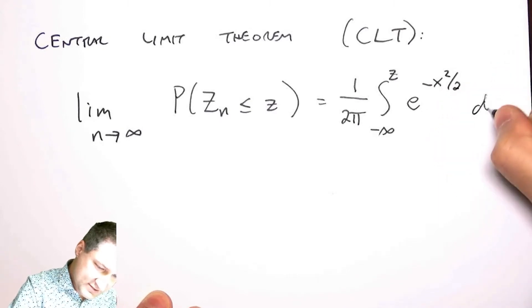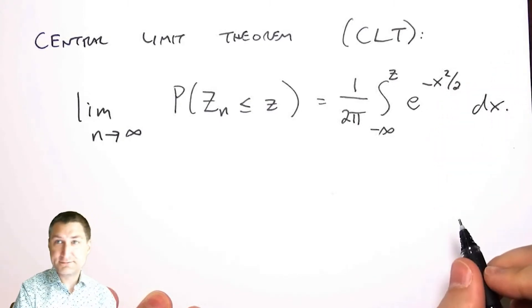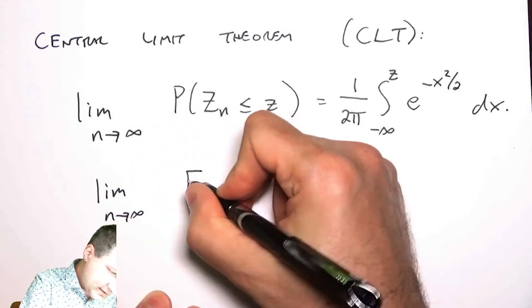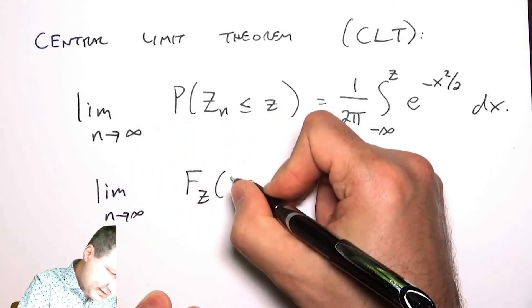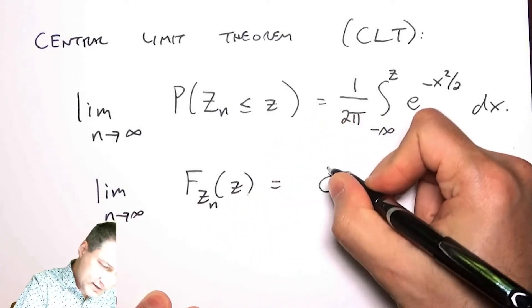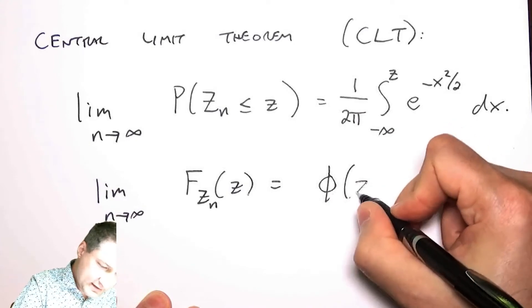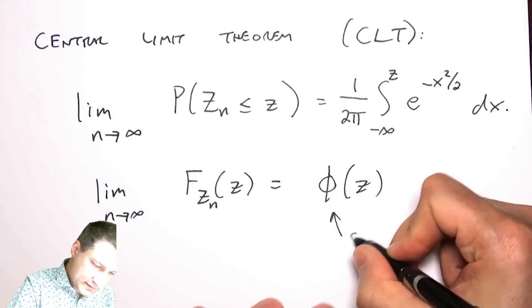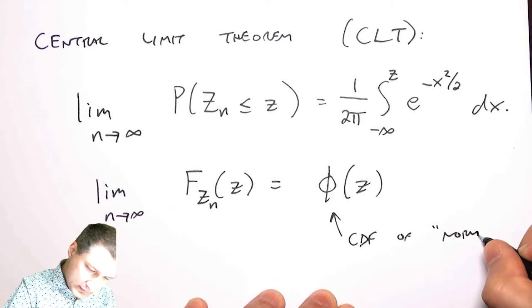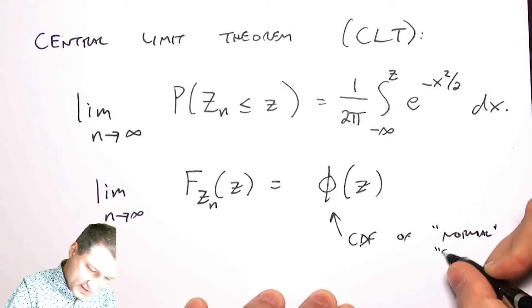The Central Limit Theorem says that in the limit, the CDF of z is equal to the CDF of kind of what we called our normal or our standard Gaussian.